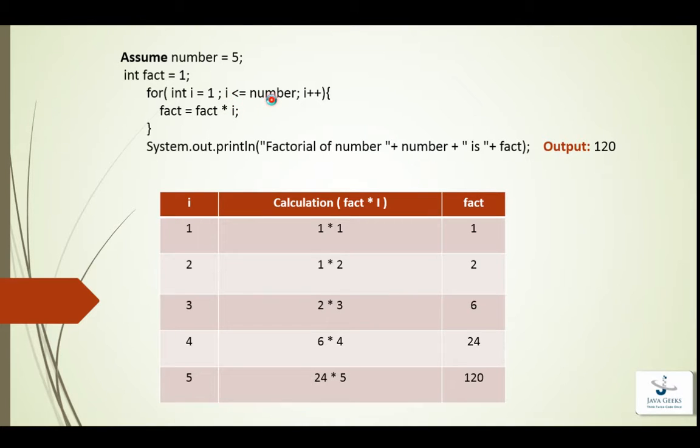So here you can see when i is 1, that is the first execution of this for loop block, that is i is 1 and fact equals to fact multiplied by i.